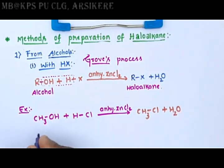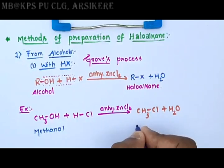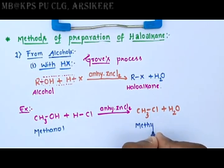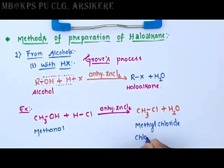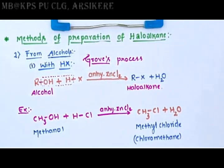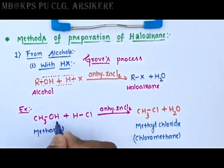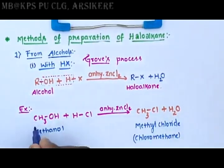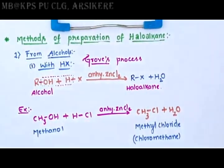The name of this molecule CH₃Cl is methyl chloride, or chloromethane. When CH₃OH reacts, the OH and H bond breaks to give H₂O, and CH₃Cl is formed. This is the first method for the preparation of haloalkanes.